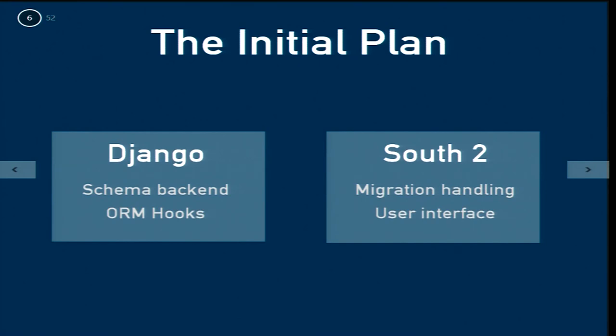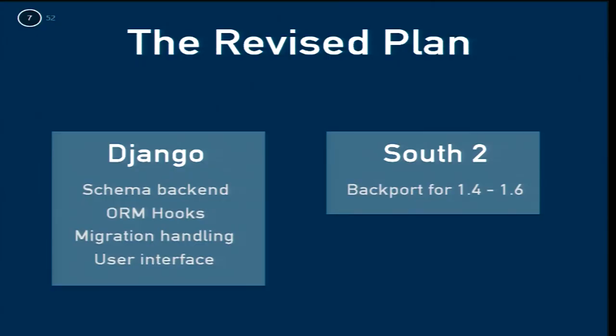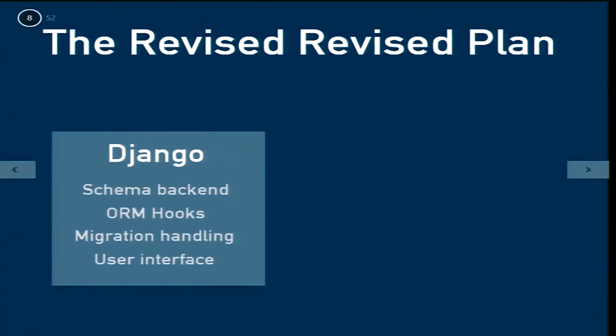The first plan for moving migrations into Django was to have two different parts. Django would have a schema abstraction for doing DDL changes to databases, and it would have ORM hooks for things like different versions of models and field changes. Then South 2 would exist with all the UI migration logic stuff — here are some files, they have operations, these turn into ORM calls. That then became: Django should have all the stuff in it, so let's put everything into Django. That turns out to be really hard.